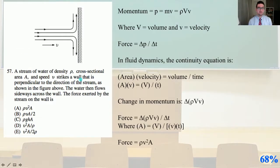Number 57. A stream of water of density ρ, cross-sectional area A, and speed V strikes a wall that is perpendicular to the direction of the stream. The water then flows sideways across the wall. The force exerted by the stream on the wall is? Our momentum P equals mass times velocity equals ρ times the volume times the velocity. The force equals the change in momentum over the change in time.